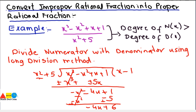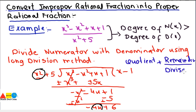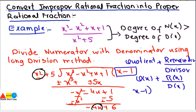After cancellation we get -4x + 6. We stop the division here because the power of x in the remainder is 1 and the power of x in the denominator is 2, so it is now in proper fraction form. We can write it in the form: quotient plus remainder divided by divisor. So the quotient is x - 1, the remainder is -4x + 6, and the divisor is x² + 5.